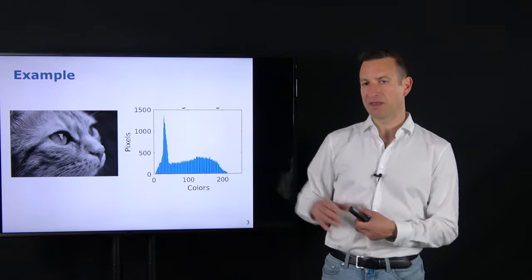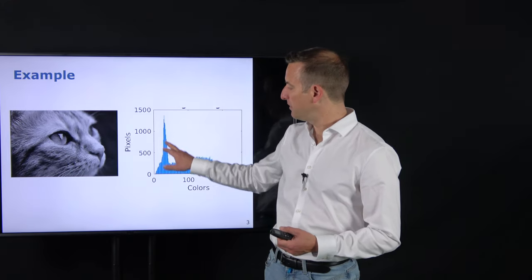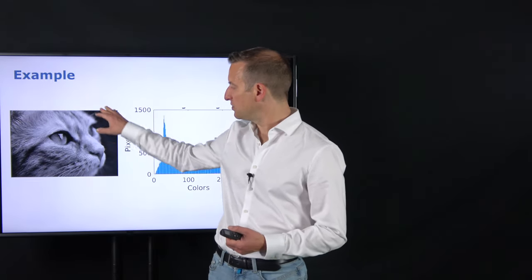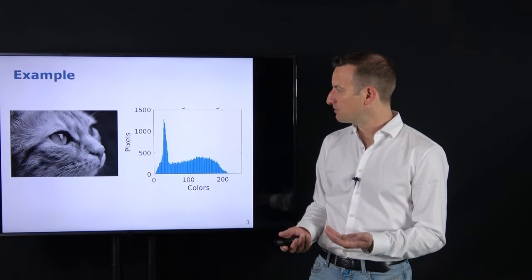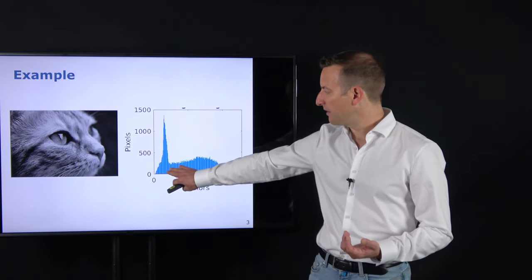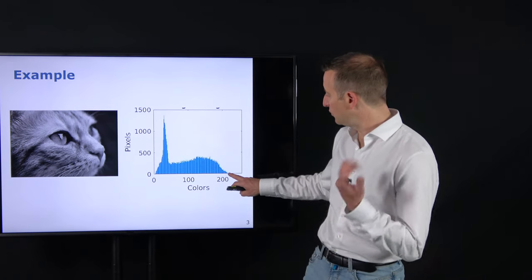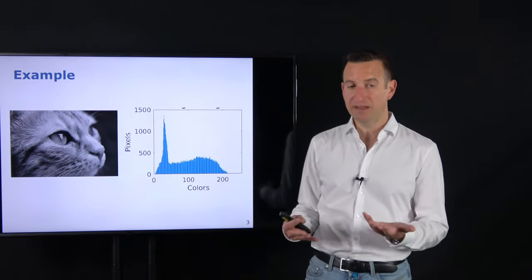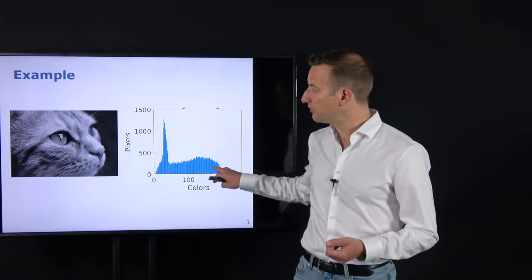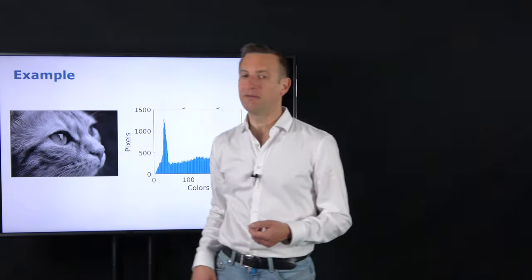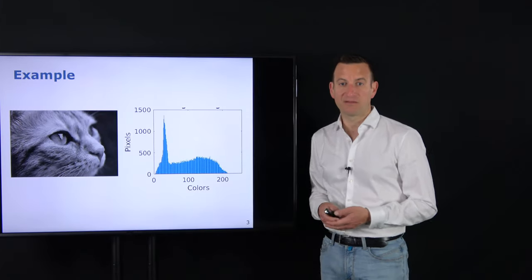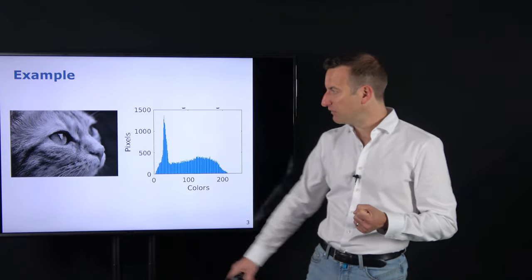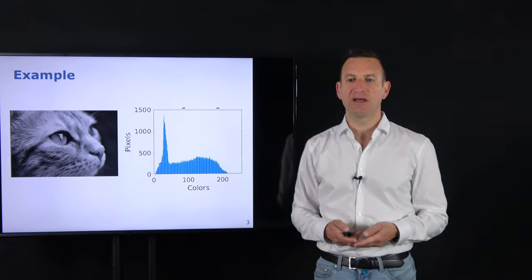The histogram tells us something about the image. For example, a peak of dark values corresponds to a rather uniform dark area in the image. The remaining intensity values from roughly 50 to 200 span more or less equally over the image, corresponding to a roughly uniform distribution. This is something we can compute very easily for every image. The question then becomes: what happens if I transform the image and change its intensity values?